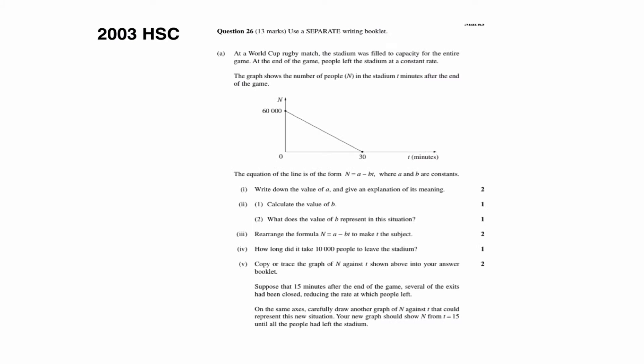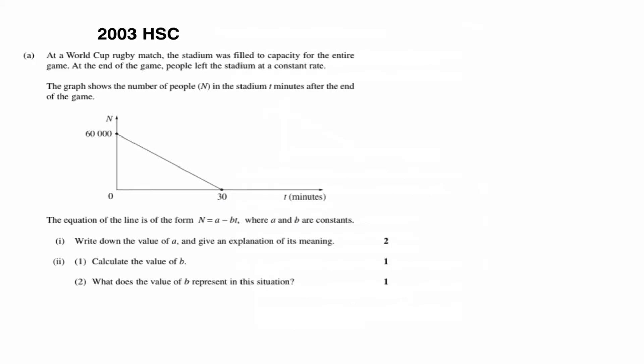Okay, I really like this question from the 2003 HSC. It's a little bit small there, so it's question 26, and it was worth quite a few marks. So we're going to work through it a bit at a time. So at a World Cup rugby match, the stadium was filled to capacity for the entire game. At the end of the game, people left the stadium at a constant rate. The graph shows the number of people n in the stadium t minutes after the end of the game. The equation of the line is of the form n equals a minus bt, where a and b are constants. Write down the value of a and give an explanation for its meaning.